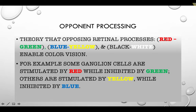Think of opponents as boxers trying to knock the other color out. The opponent pairs are always the same: red-green pairs, blue-yellow pairs, and black-white pairs. Some ganglion cells are excited by red and inhibited by green — if more red signals come in, we see red and green is turned off. Others are excited by yellow and inhibited by blue, or vice versa. You need to know these three pairs: red-green, blue-yellow, and black-white.